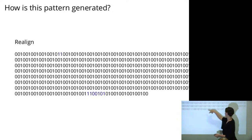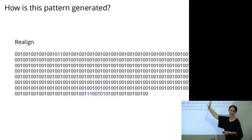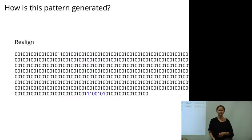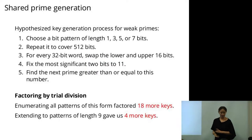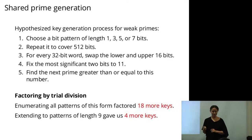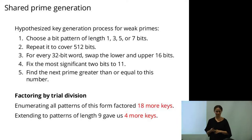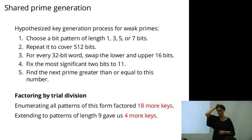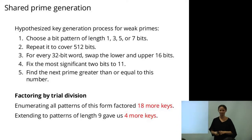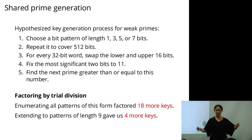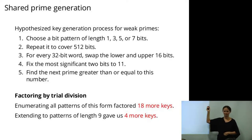This breaks the periodic pattern because it's the part that got incremented to the next prime, but apart from that it's totally periodic. We hypothesized that repeated factors have the form: choose a bit pattern of small prime length, repeat it to cover 512 bits, swap the 16-bit words inside, clamp the top two bits to one, then increment to the next prime. This suggests a new factoring algorithm: generate everything of this form and do trial division.